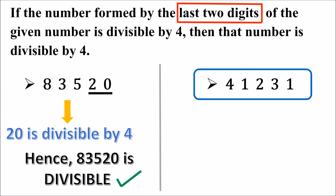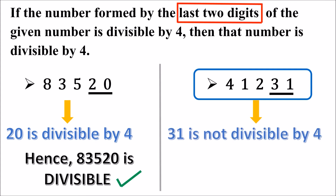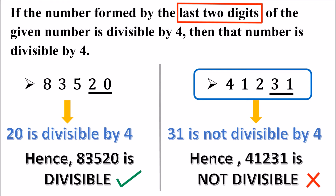Is this number divisible by 4? Look at the last 2 digits of this number — that is 3 and 1. The number formed by the last 2 digits is 31. Is 31 divisible by 4? No, 31 is not divisible by 4 because 31 is not a multiple of 4. If the last 2 digits of the given number are not divisible by 4, then the given number will not be divisible by 4.